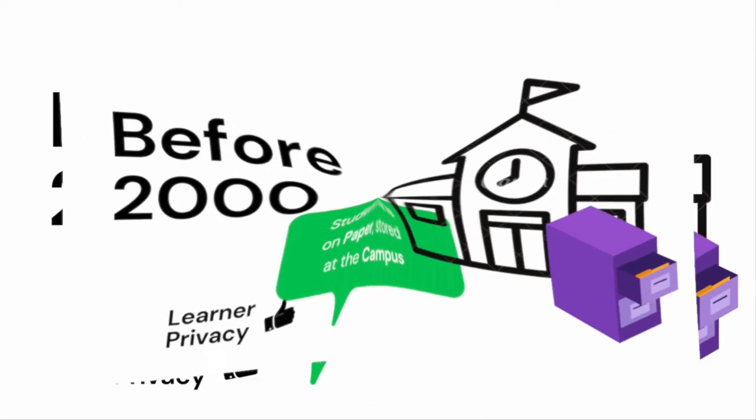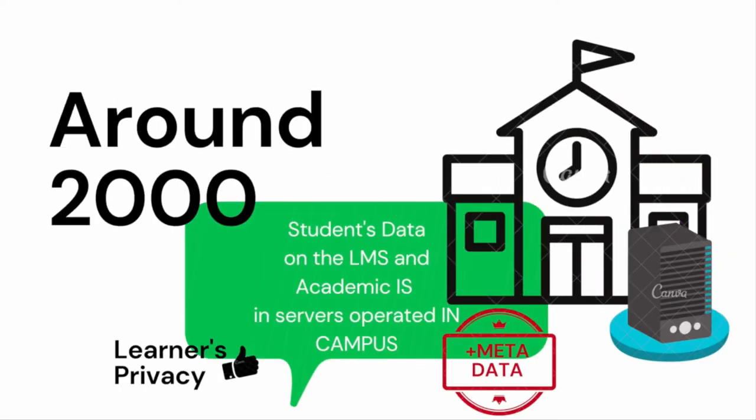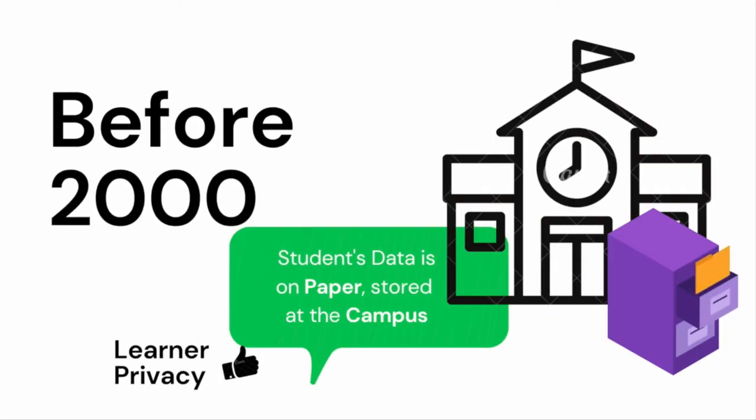Around 2000, we started having almost everywhere these learning management systems and academic information systems that were running in production on servers operated in the campus of the universities and the learning institutions. All were always under control. Learner privacy was okay, but we also had metadata — usually in the form of log files in the learning management systems and servers — and it was inside the learning institution, so there was no problem with privacy.